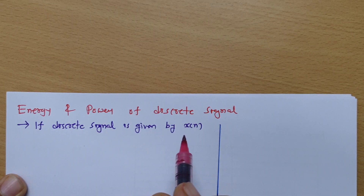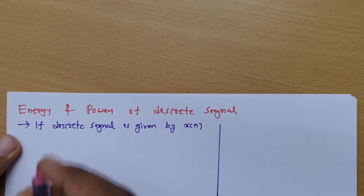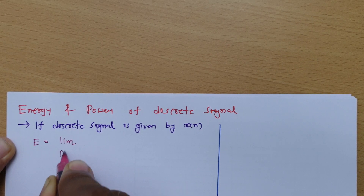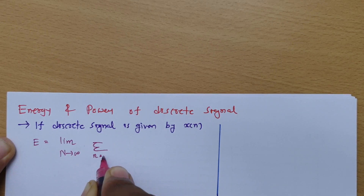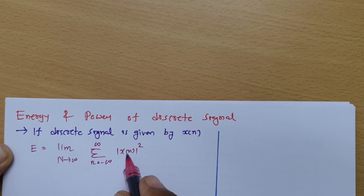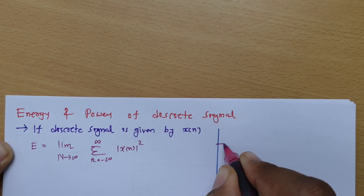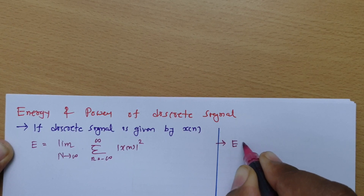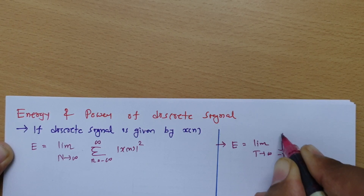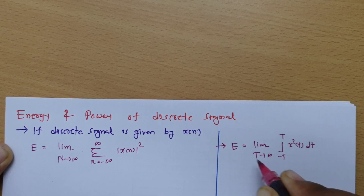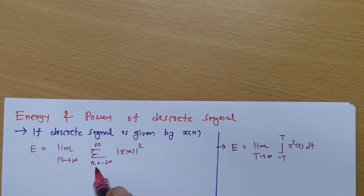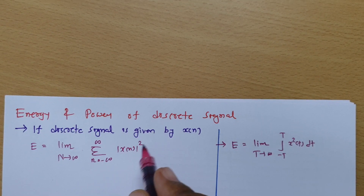If a discrete signal is given by x(n), then we can calculate energy by the limit as n tends to infinite, summation where n varies from minus infinite to infinite, of |x(n)|². For continuous time signals, energy is calculated by limit t tends to infinite, integration from minus t to t of x²(t) dt. But for discrete signals, energy is calculated by limit n tends to infinite, summation n from minus infinite to infinite of x(n)².